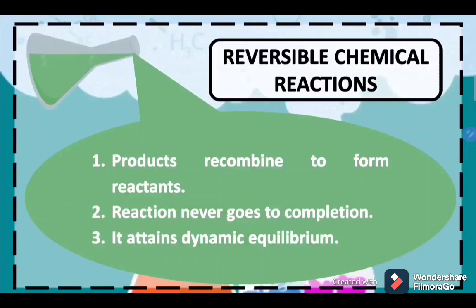When the reactants combine to yield that product, the product again will break down to create again the original reactants. The process of recombination and breaking down is continuously happening on both sides of the equation.